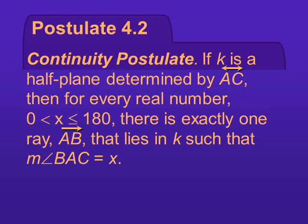The continuity postulate says that if K is a half plane determined by the line AC, then for every real number X between 0 and 180, there's exactly one ray AB that lies in K such that the measure of angle BAC equals X.